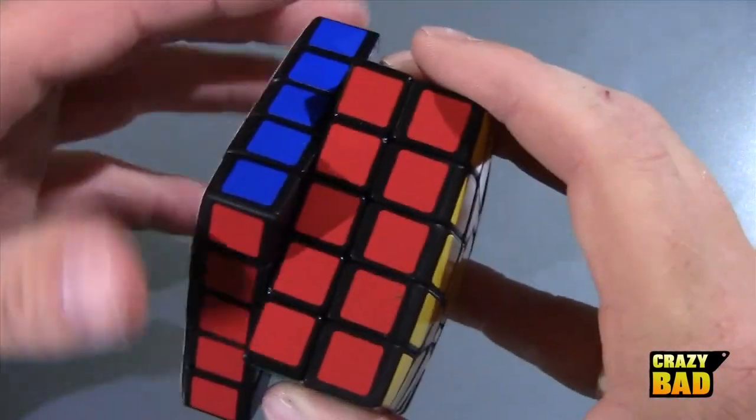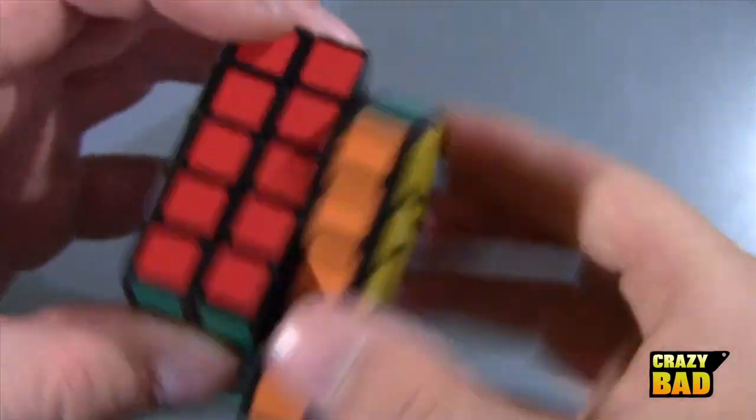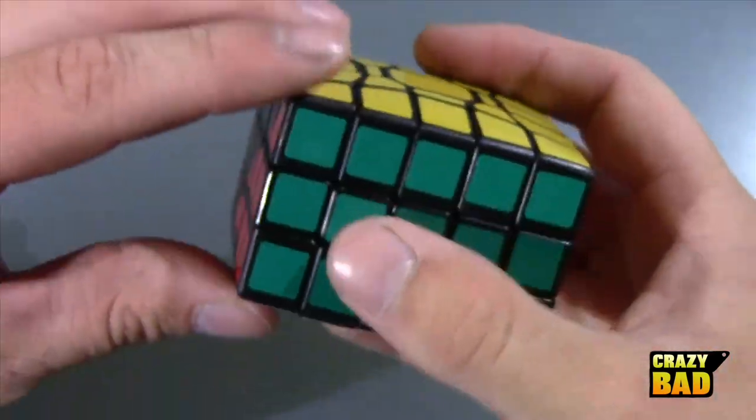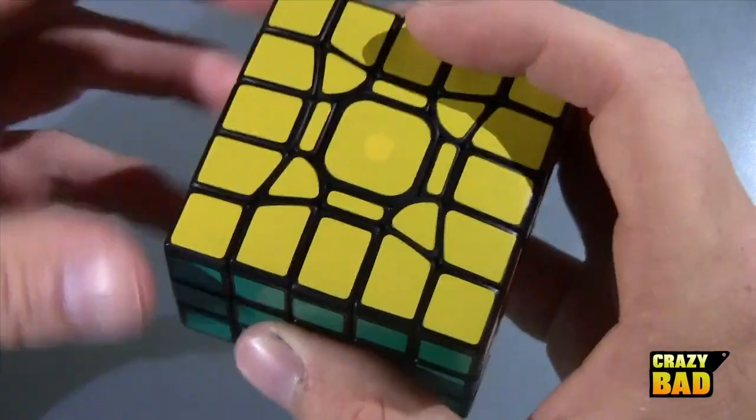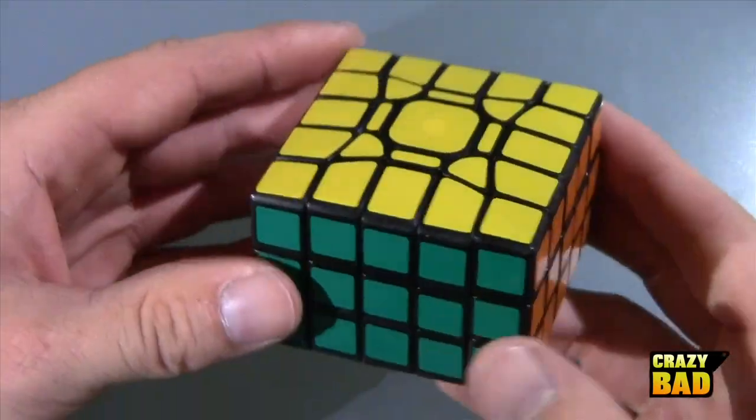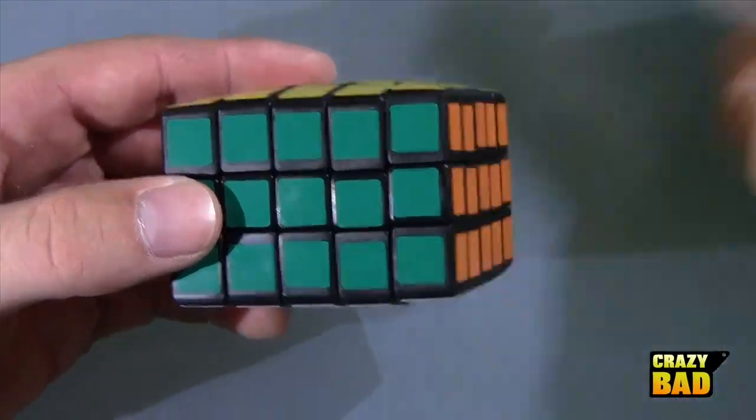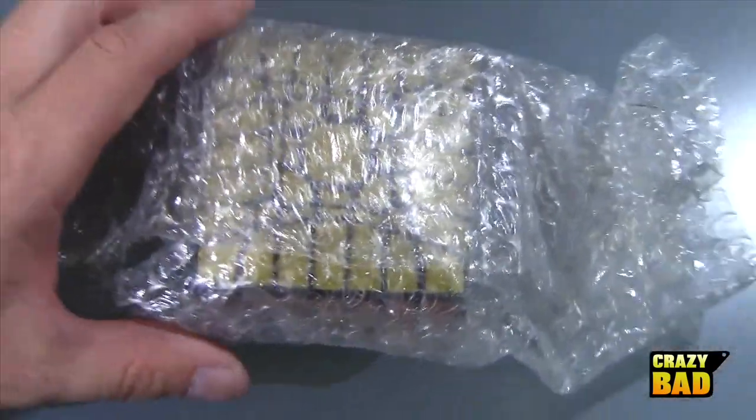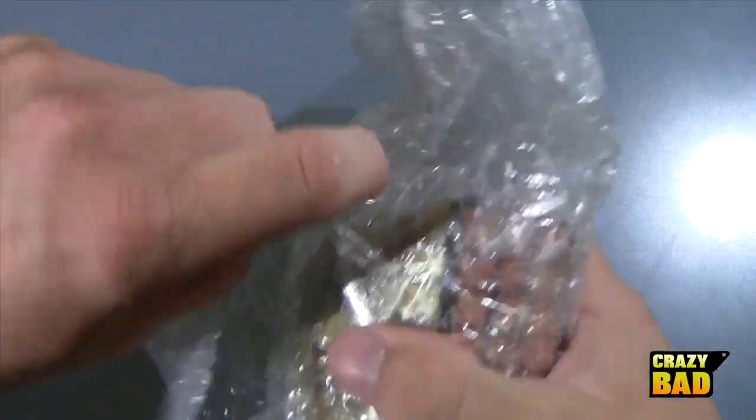All right, so here is the 3x5x5. This is made out of a Shengshou 5x5. Yeah, that's a lot better than mine already I can tell you that. This is very very nice. I'm getting ahead of myself, I'm gonna do a completely separate video on this one.